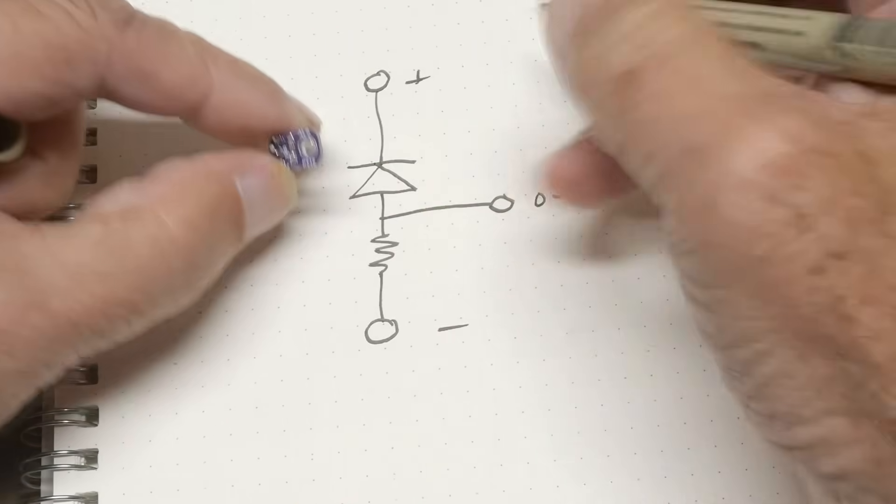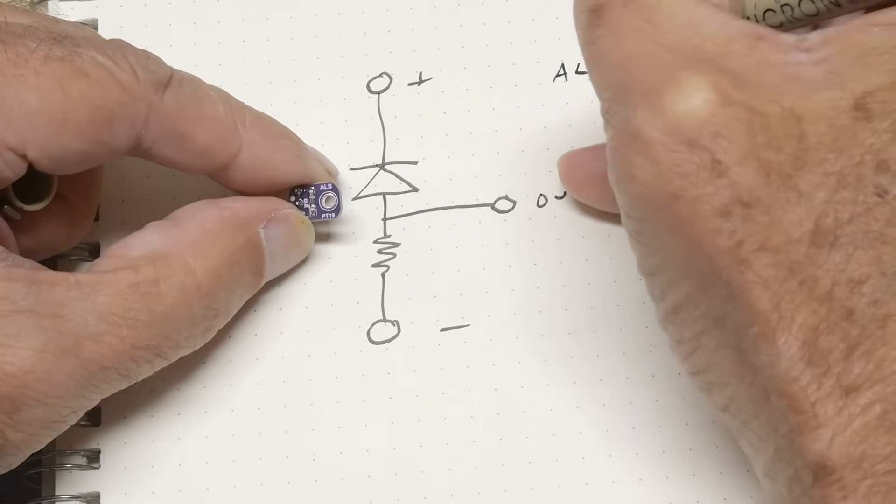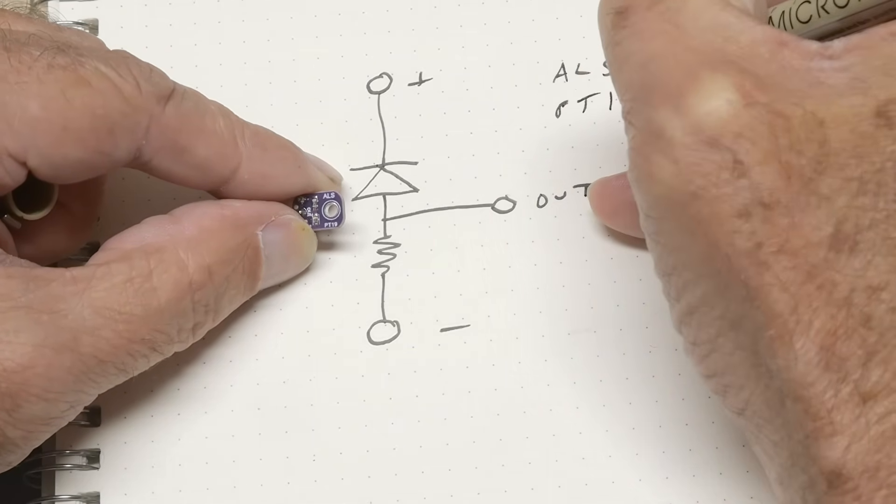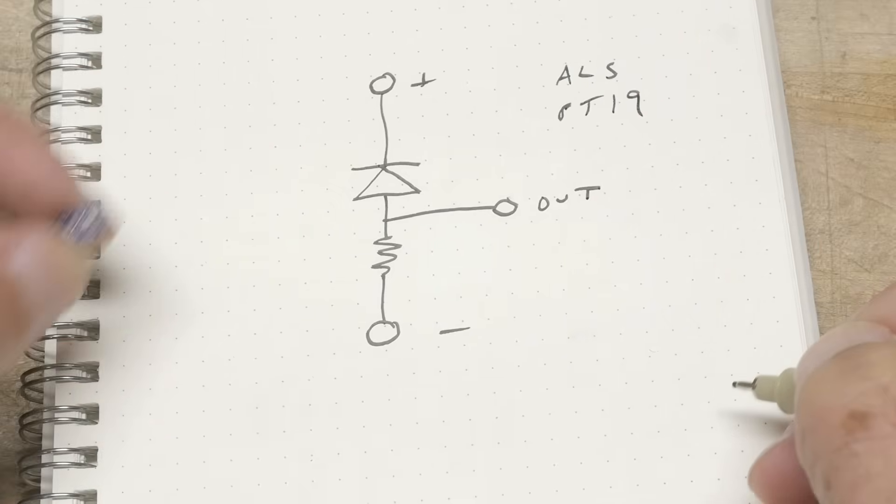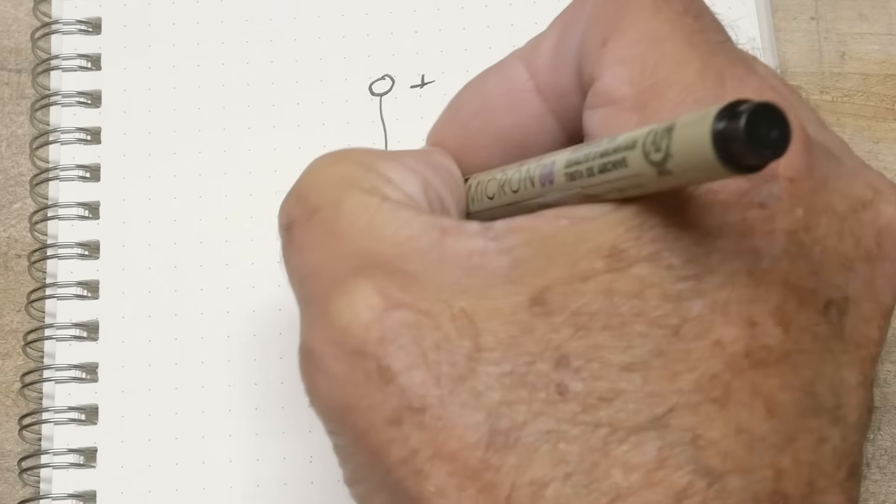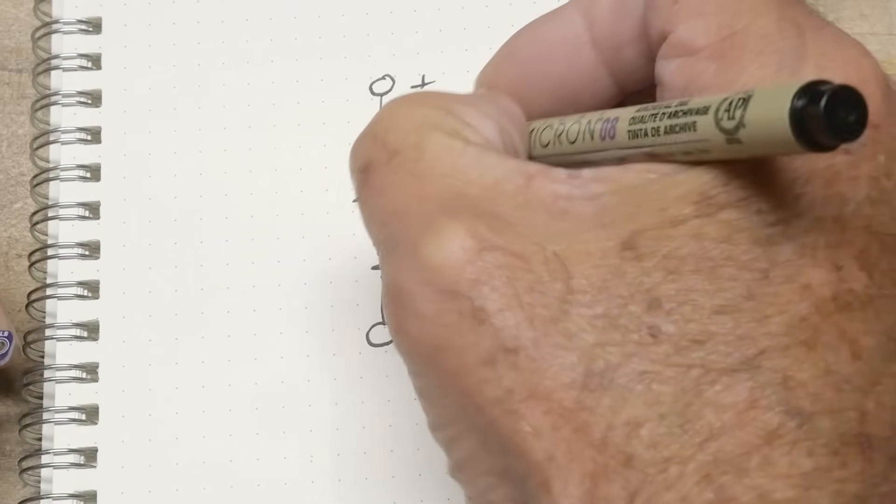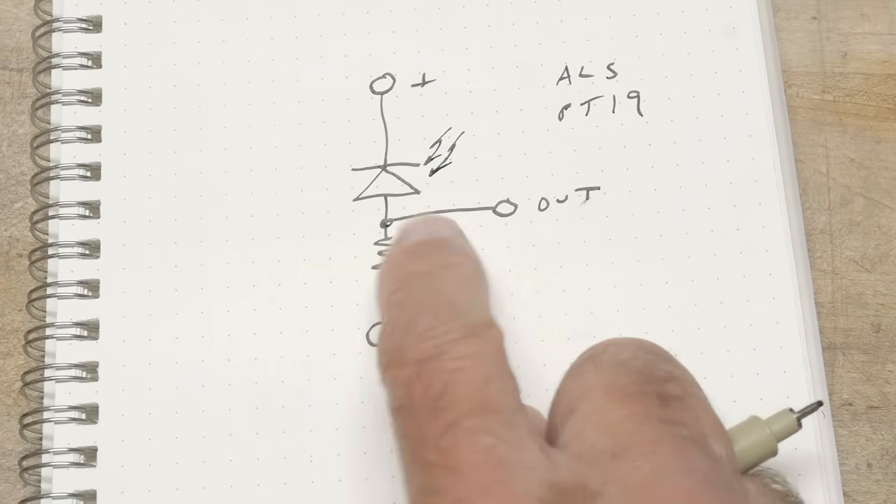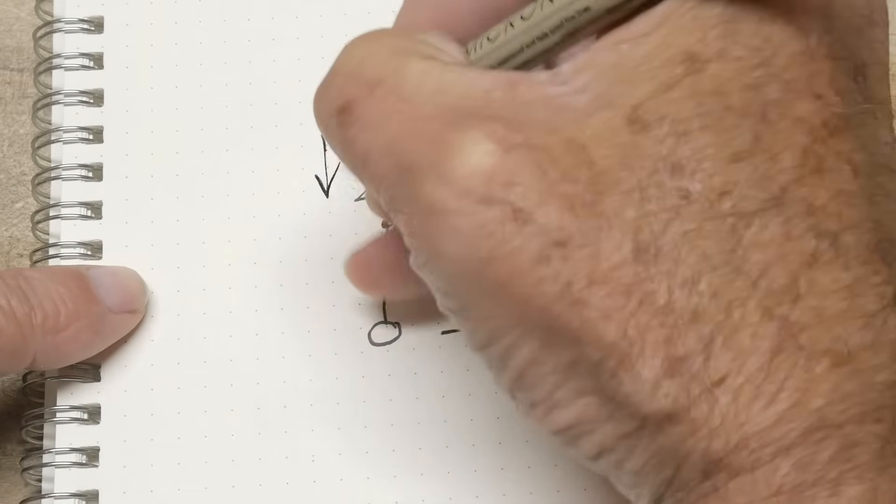Alright, it's marked, the PC board's marked ALS PT19, okay, whatever that is. But yeah, this is the circuit, so this is a photodiode. Alright, so what do photodiodes do? They leak current.